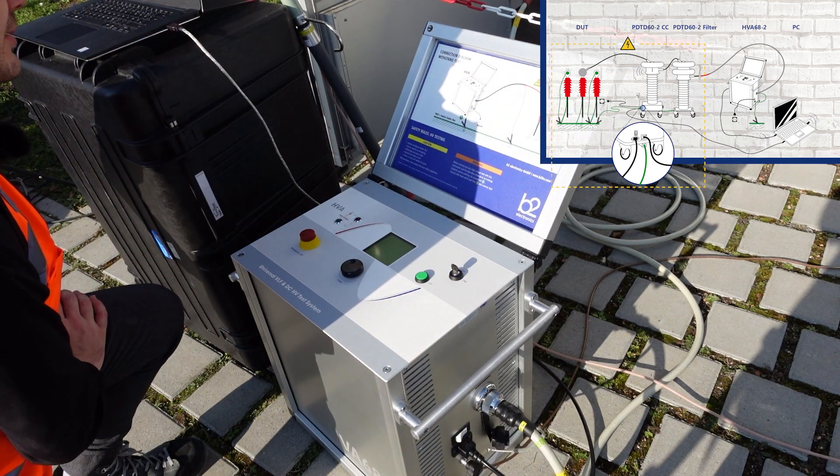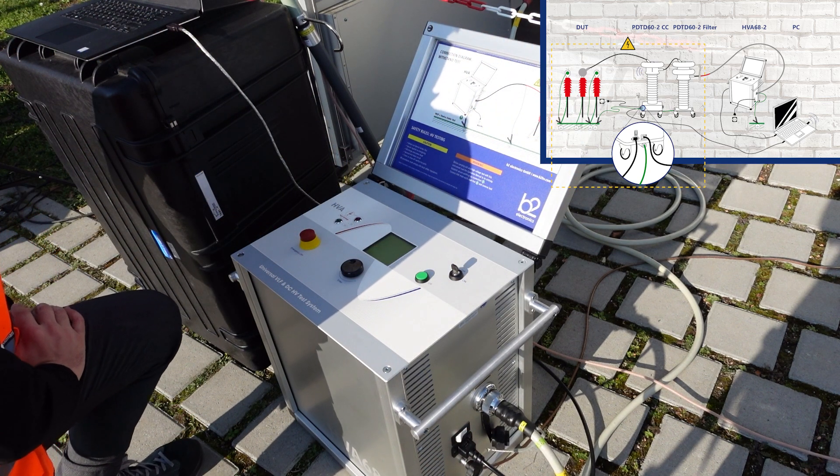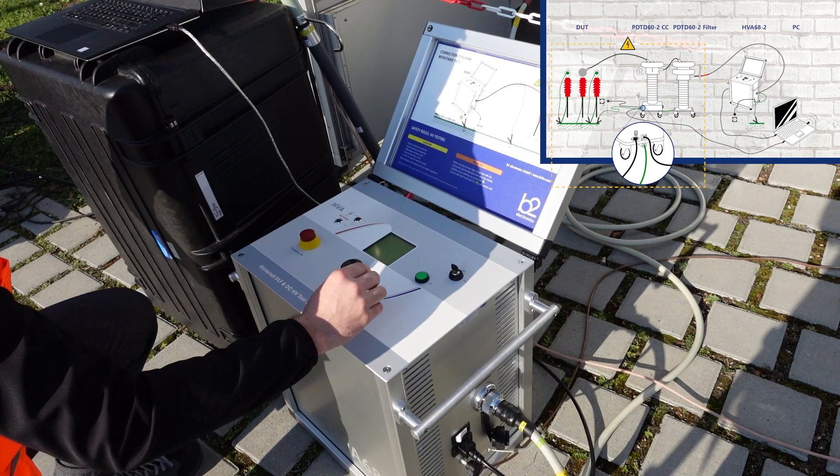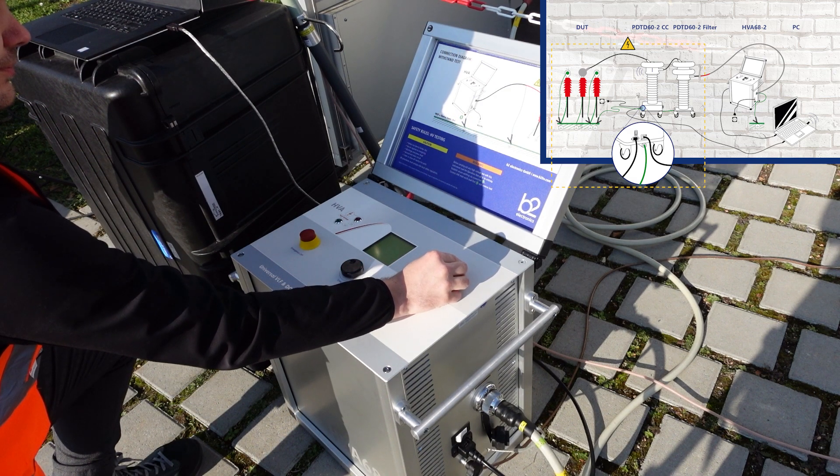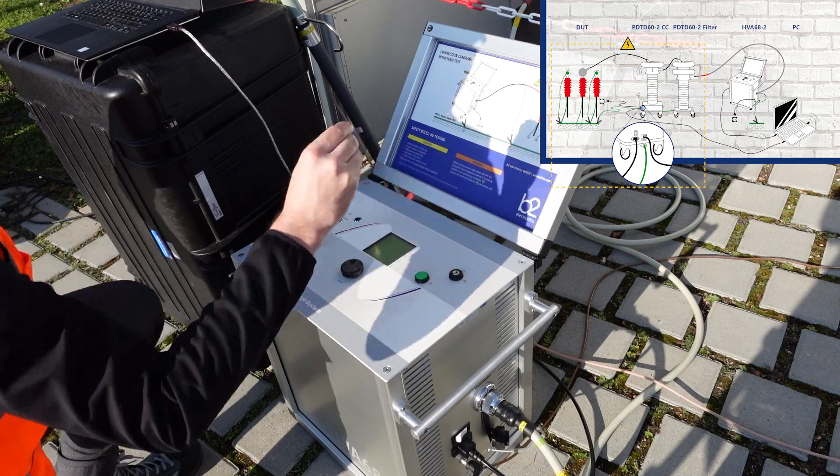Afterwards we lock the HVA in a disabled state to prevent against unauthorized use. For that we turn the key switch to the off position and remove the key.